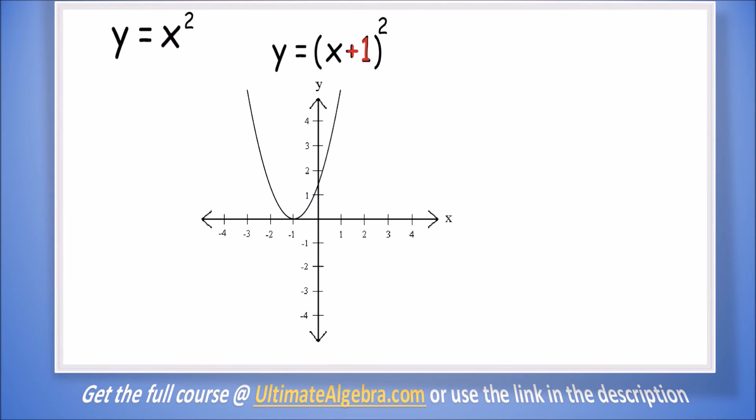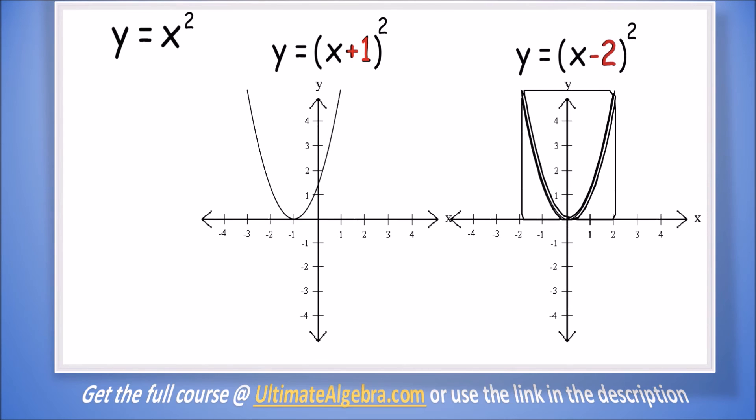We just need a rough graph that shows the shift. Let's look at y = (x - 2)². Let's bring our basic parabola. Here we move opposite what is here. We have -2, so we will move positive, which means we will move 2 to the right.